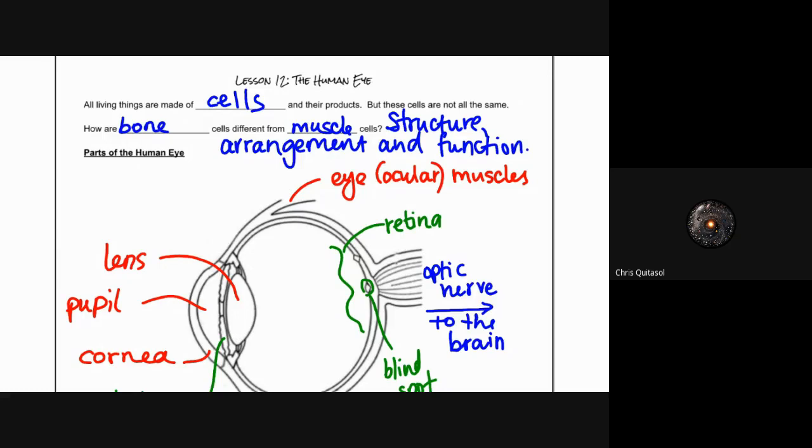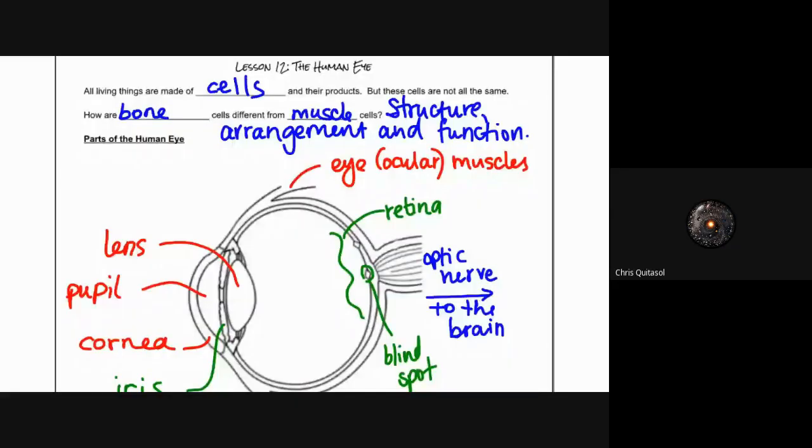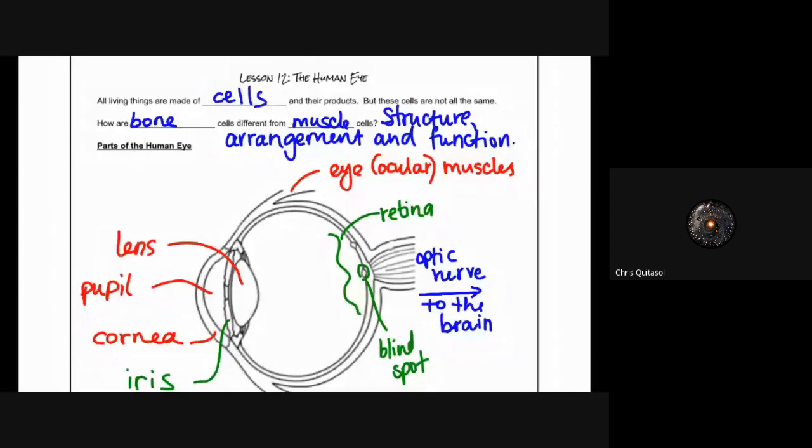We're going to look at how the eye works and specifically some aspects of biology that connect nicely into what we've learned with our optics unit. When we think of the human eye, we have to remember that all living things are made of cells as well as the products that those cells produce. Not all cells are the same - bone cells are different from muscle cells due to their structure and arrangement as well as how they function.